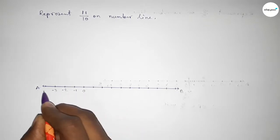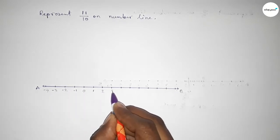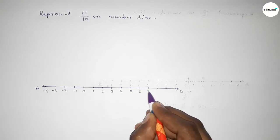So first marking the numbers by this way and taking here is starting number 0, this side minus 1, minus 2, minus 3, minus 4, this side 1, 2, 3, 4, 5, 6, 7, 8, 9, 10.